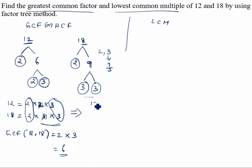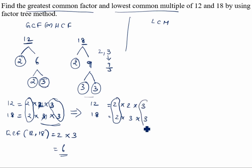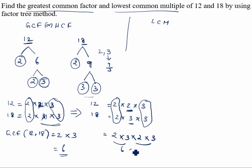For LCM: 12 = 2 × 2 × 3 and 18 = 2 × 3 × 3. Circle the common 2 and the common 3. First write the circled common factors: 2 × 3. Then write the remaining non-common factors: 2 (from 12) and 3 (from 18). So LCM = 2 × 3 × 2 × 3 = 6 × 6 = 36. The LCM of 12 and 18 is 36.